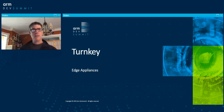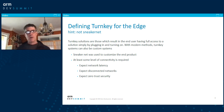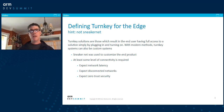I want to talk to you today about turnkey or edge appliances. Turnkey is a way to deliver software and hardware in a package that's easily manageable, usable by end users. It's really a device that ends up with the end user having full access to the solution simply by plugging it in or turning it on.